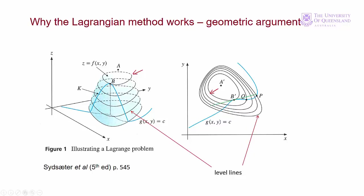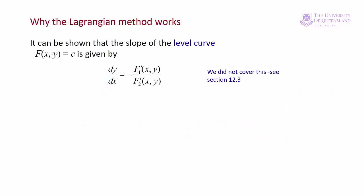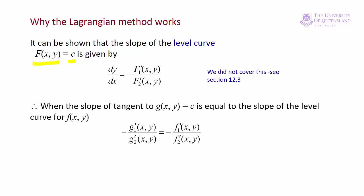In the xy plane we can express the slope of the tangent in terms of dy/dx. The slope of any level line in the xy plane is given by dy/dx equals minus f₁' over f₂' — that is, minus the ratio of the first partial derivative with respect to x over the first partial derivative with respect to y. We can also treat the constraint as a level curve. At point b' the slope of the constraint equals the slope of the level line of the objective function.